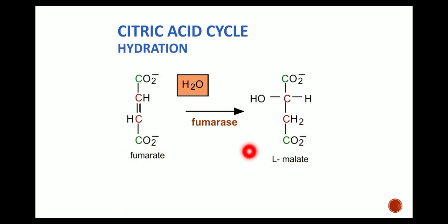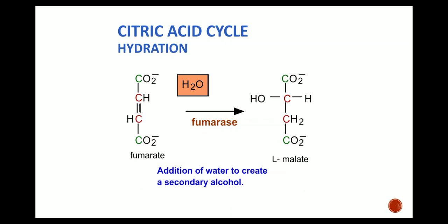Fumarate is converted into L-malate. Between the double bond, hydration occurs — the double bond is broken and forms the L-malate structure. This is the L-form of malic acid. In this step, water is added to create a secondary alcohol, with the OH group attached to the secondary carbon.